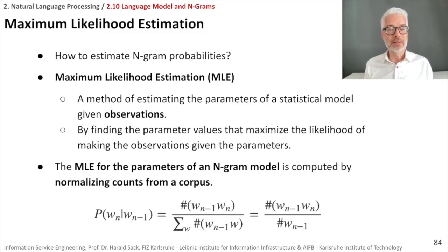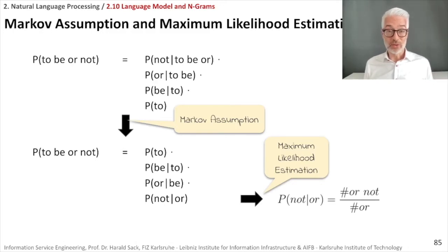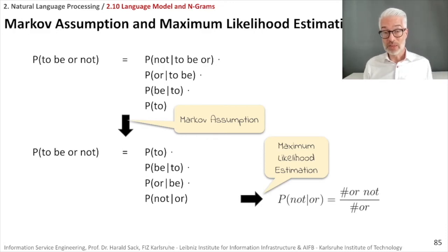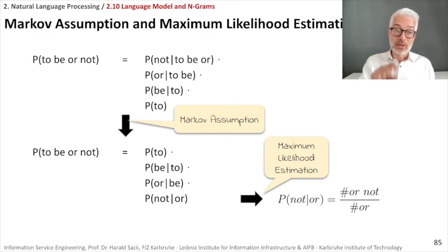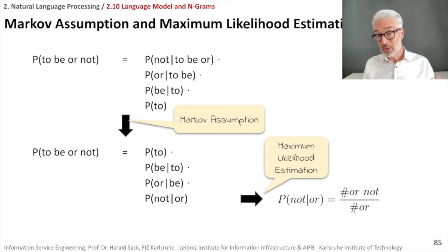This is a simple division of two word counts from the corpus, easily computed. So what we do to compute sentence probability is: apply the Markov assumption, requiring not the entire history but only a few preceding words; choose an n-gram size; then use maximum likelihood estimation, counting the occurrence of these n-grams in the corpus. This gives us the probabilities we need for our language model.